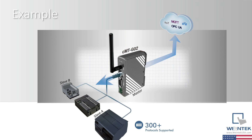Alternatively, a protocol gateway may also function as both a master and slave, in which a master device sends data to the gateway, this data is converted, and then distributed to another slave device that communicates through a different protocol.